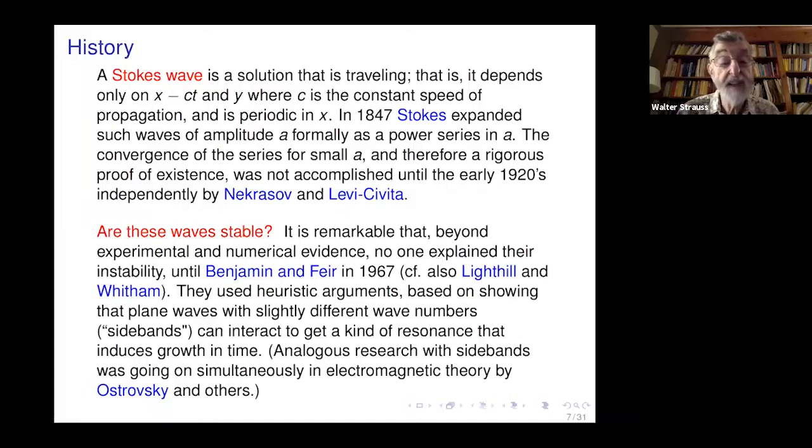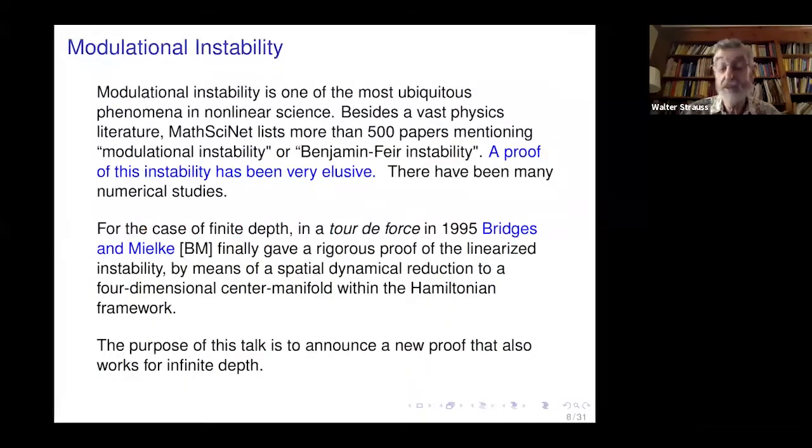So are these waves stable? There was numerical and experimental evidence of instabilities, even in a periodic wave. But it wasn't until 1967 that Benjamin and Fear wrote a paper which really explained what was going on, though it was somewhat heuristic. There were also important contributions from Light Hill and Whittem at about the same time. You change the wave number a little bit and get a kind of resonance, which leads to the instability.